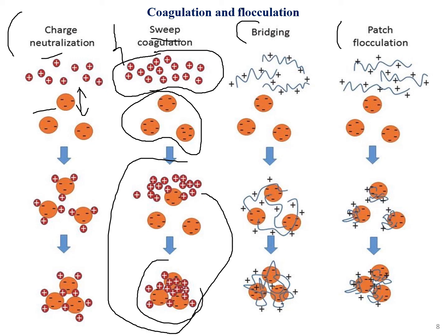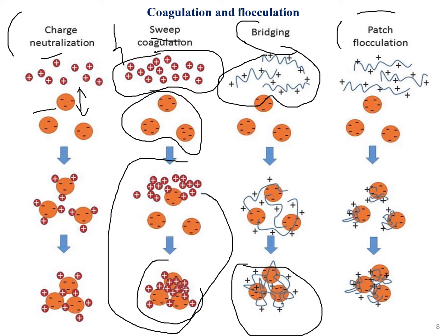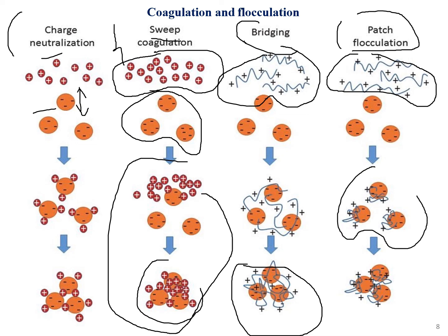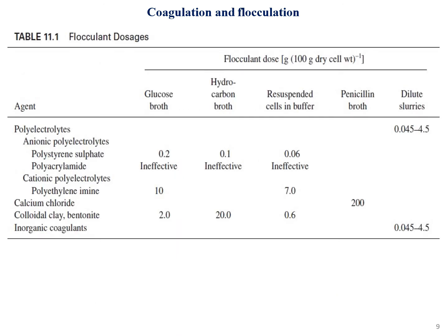Another mechanism is bridging, where addition of other electrolytes leads to formation of another set of small flocks. Patch flocculation involves the addition of polyelectrolytes that combine with oppositely charged particles in the fluid medium, causing them to interact and form larger flocks so they become heavier and settle more easily.